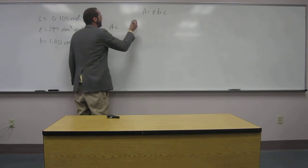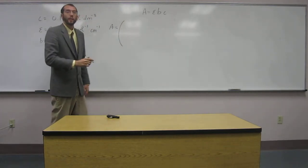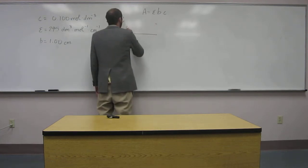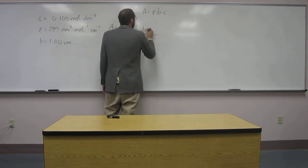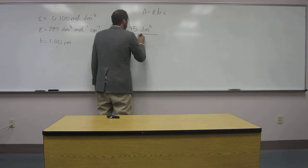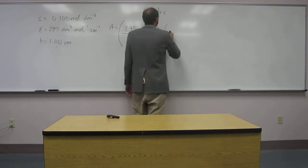I like to write it so I can cancel my units out, so I'm going to write it like this. So we're going to write 2.95 decimeter cubed per 1 mole times centimeter. That's epsilon or molar absorptivity.